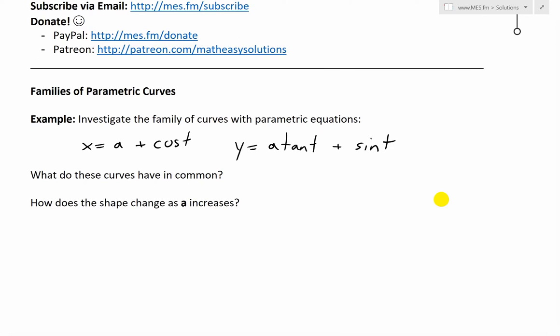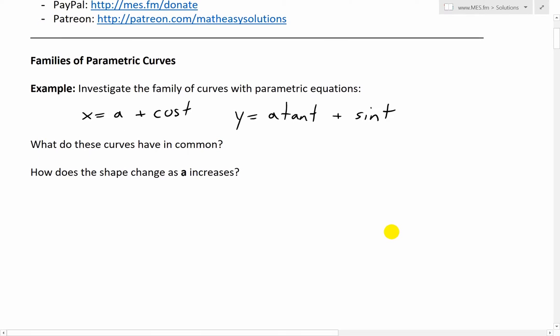Speaking of families of curves, let's look at this example. It states, investigate the family of curves with parametric equations x equals a plus cosine t, and y equals a tan t plus sine t. What do these curves have in common, and how does the shape change as a increases?